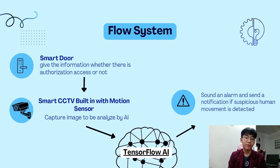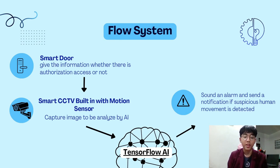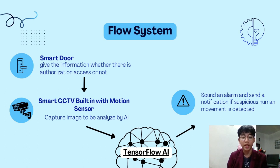It starts from the smart door, which gives information about whether there is an unauthorized access or not. If there is unauthorized access, the smart CCTV — built-in with a motion sensor — captures the image to be analyzed by AI. This is the AI with TensorFlow AI.